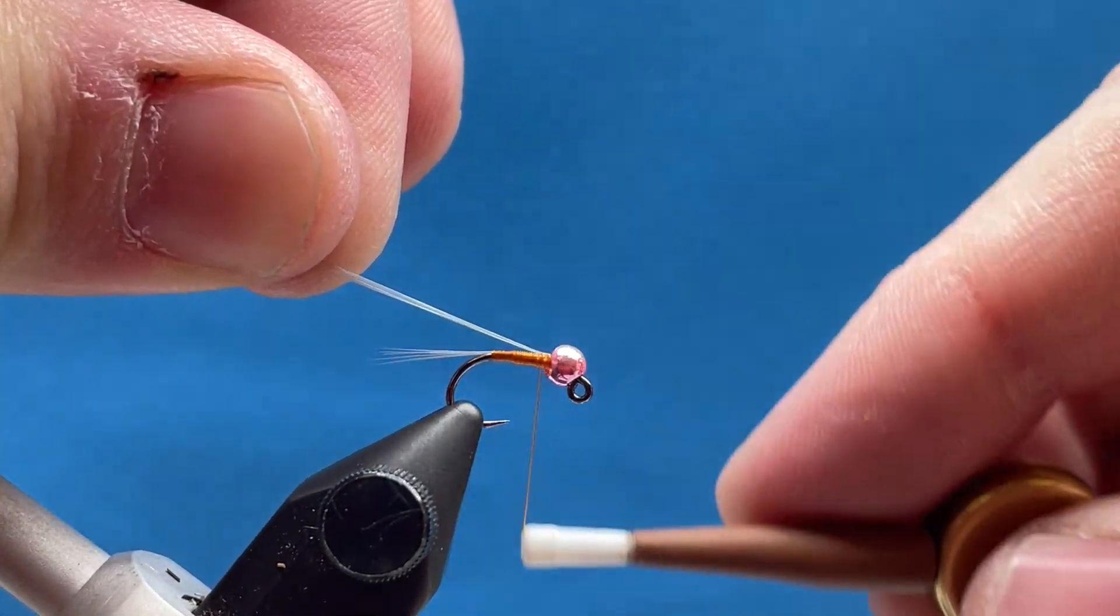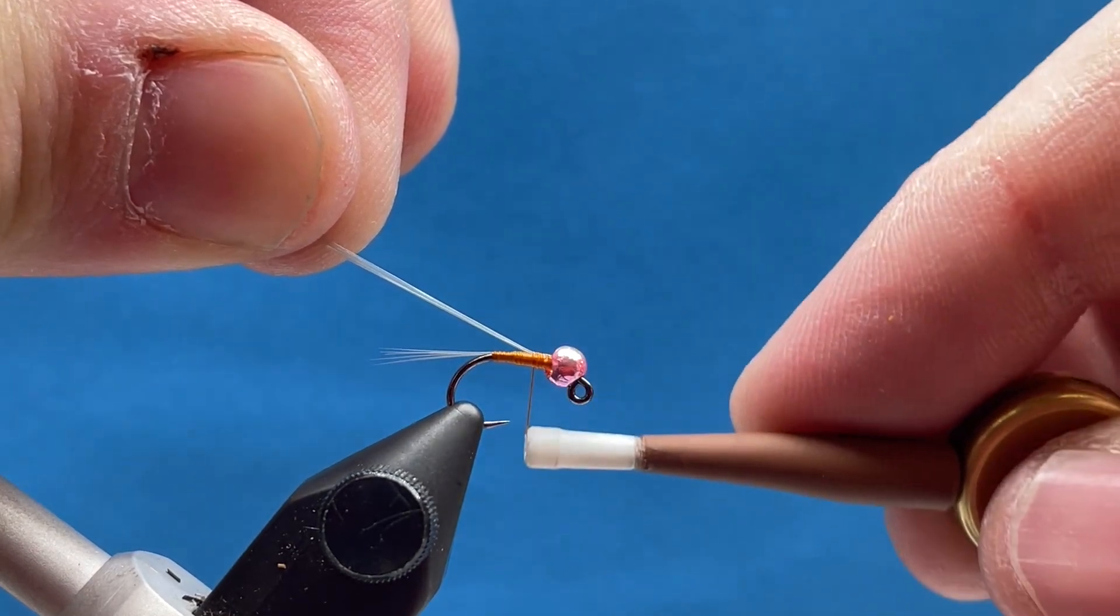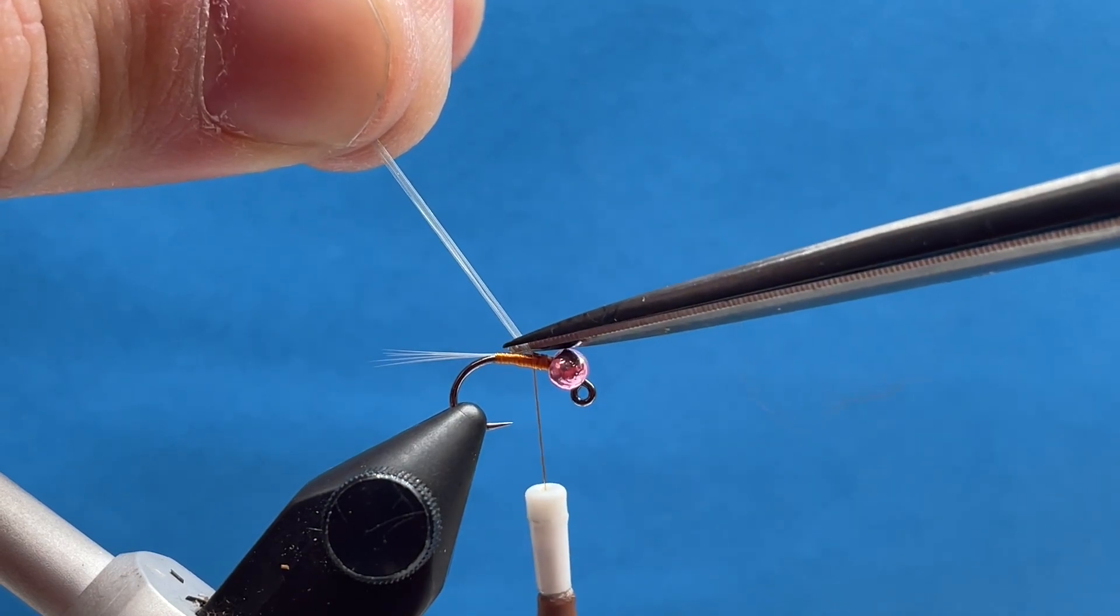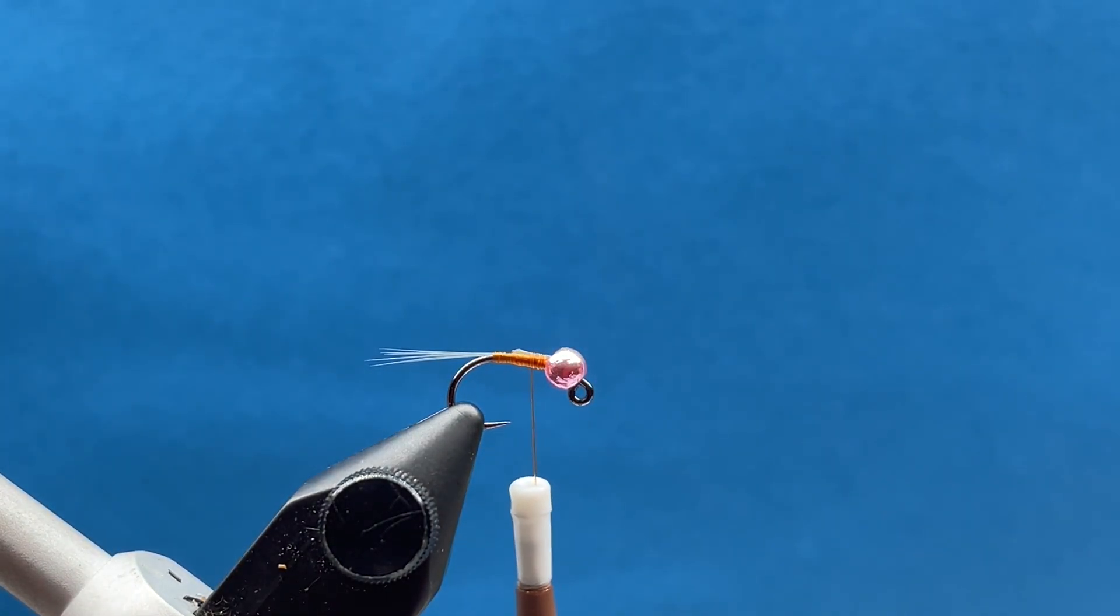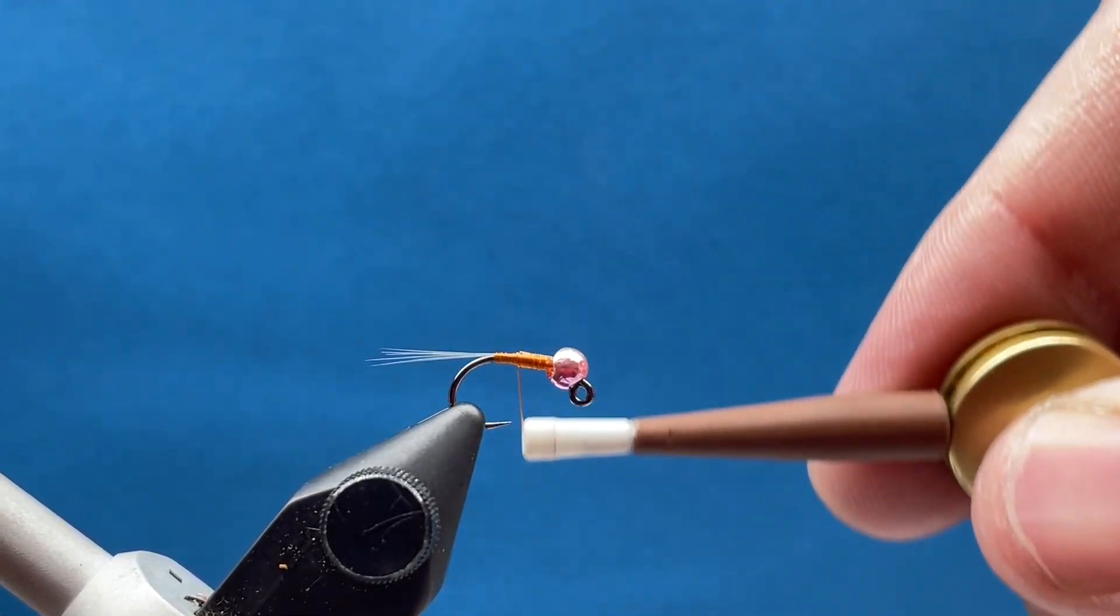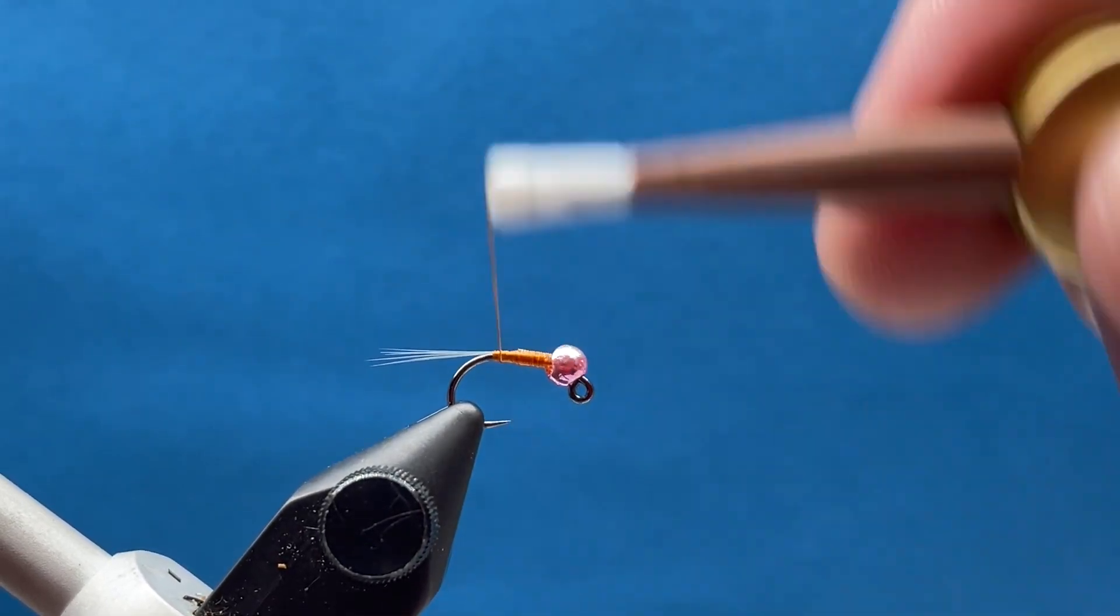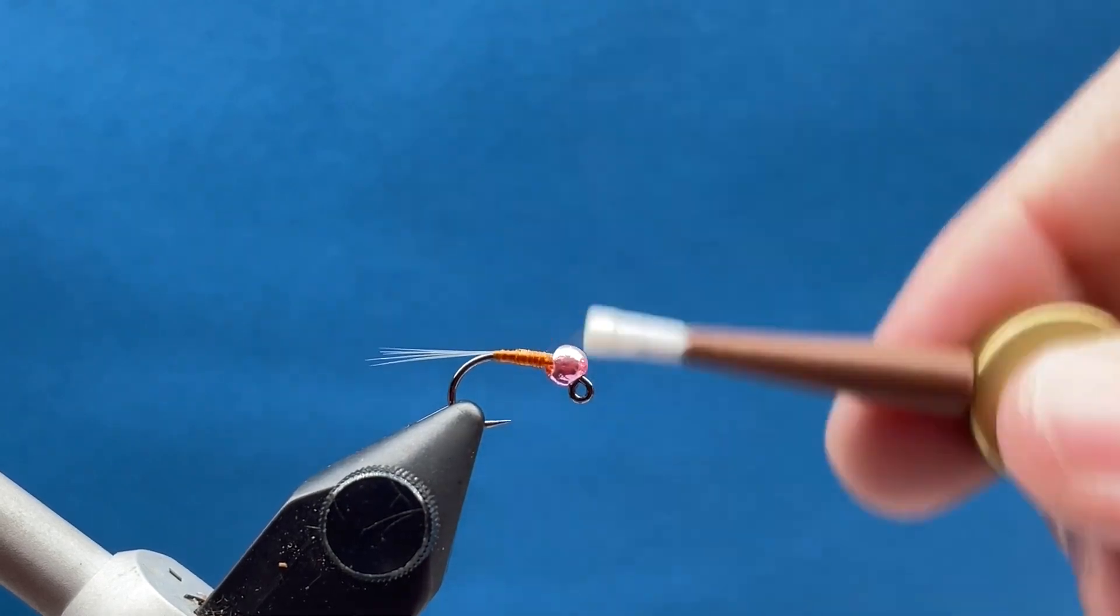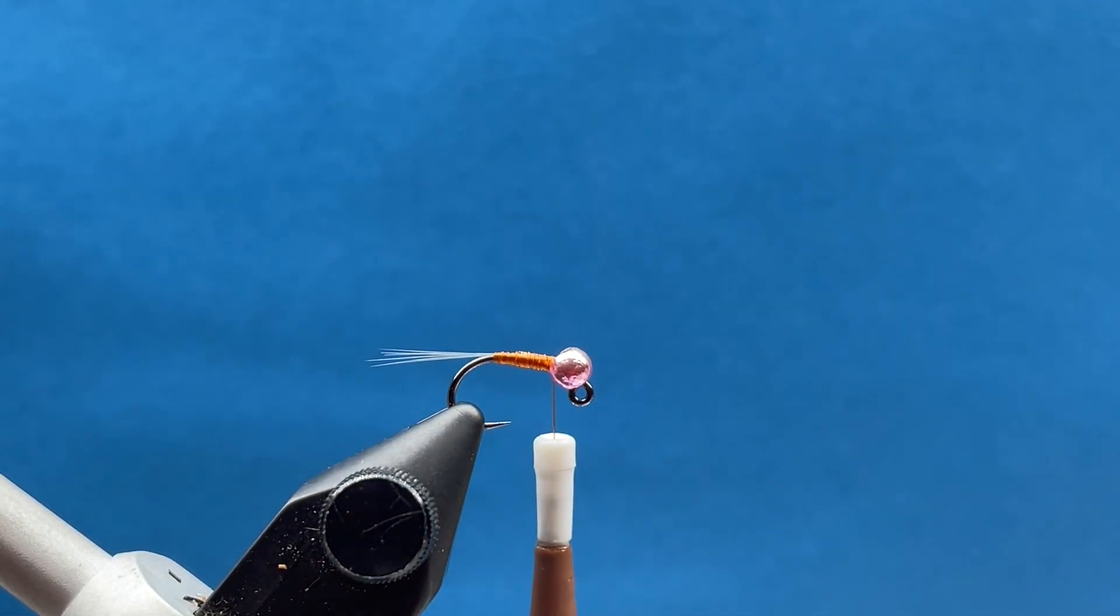I'll wrap back to about the halfway point of the hook here. This will just help build a more natural taper on the fly, so we want a nice, even, smooth taper. It's going to be skinny towards the tail and a little fatter as we work up to the bead of the fly here. I'm just going to work my way back up to right behind the bead again, and then we'll tie in our wire.